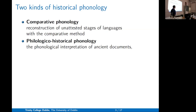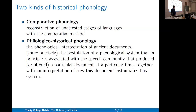There are two kinds of historical phonology. One is comparative, where we reconstruct unattested languages by comparing related languages. The other is what I'm calling philological historical phonology — the phonological interpretation of ancient documents.